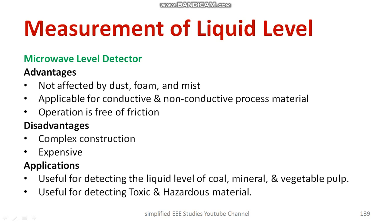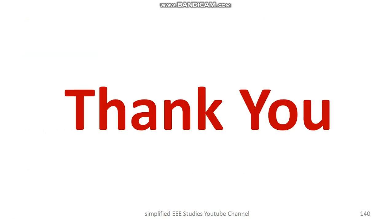What are the major setbacks? The construction is complex and it is quite expensive. Generation of microwave is not an easy task. The major applications include detecting the liquid level of coal, minerals, and vegetable pulp. It can be used in thermal power stations and is useful for detecting toxic and hazardous materials.